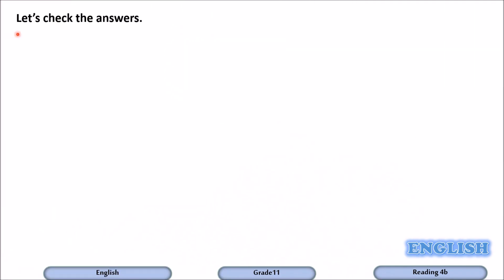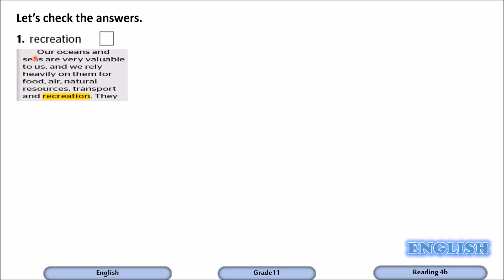Let's check our answers. The first word is recreation. The sentence reads: 'Our oceans and seas are very valuable to us and we rely heavily on them for food, air, natural resources, transport and recreation.' Recreation means leisure activities.